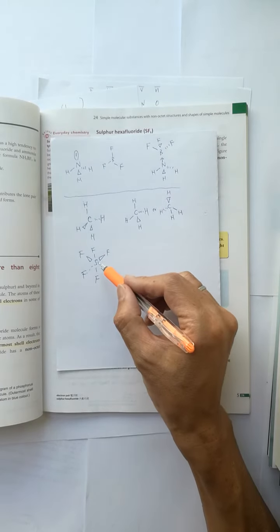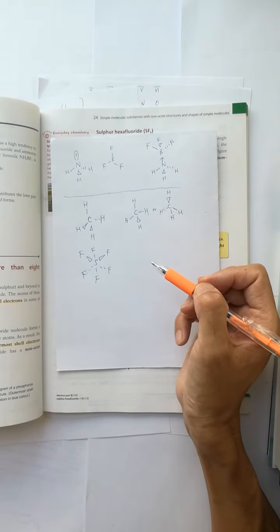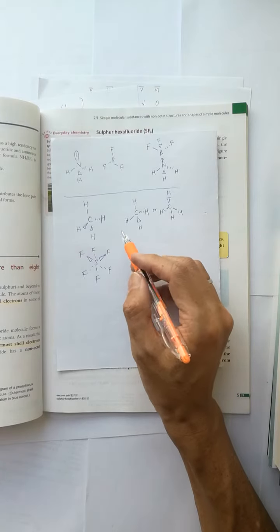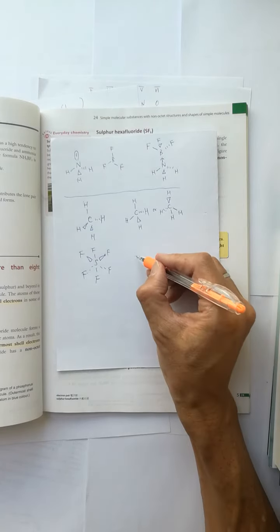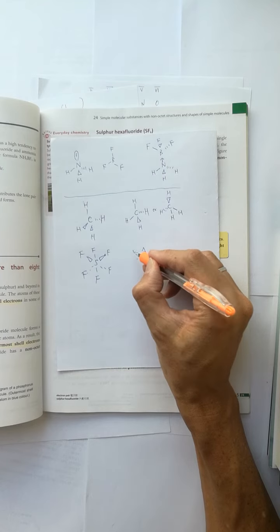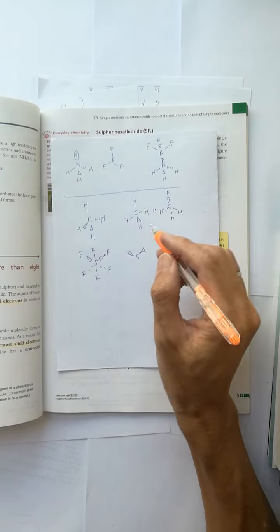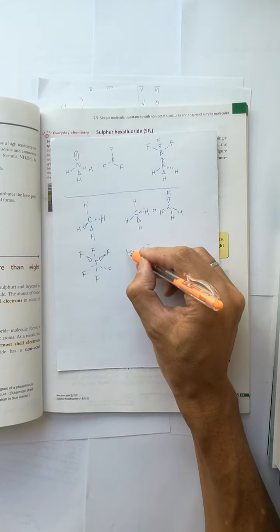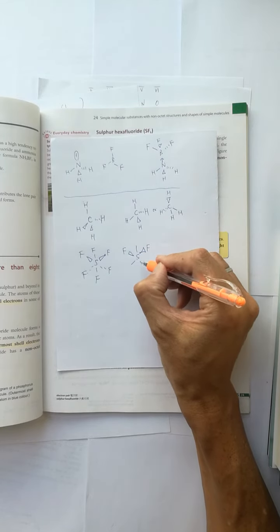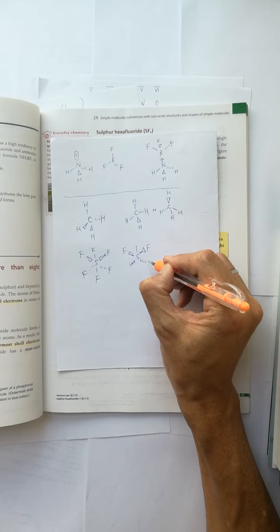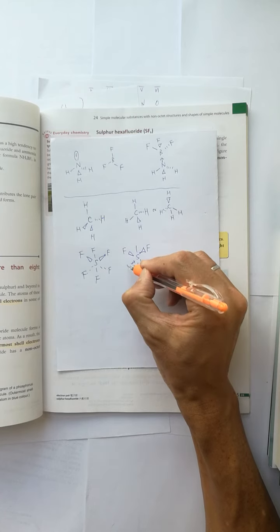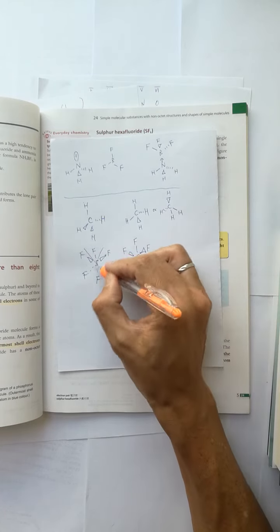And for the triangle, the pointed side should be pointed to the central atom, not the side of the triangle point to the central atom. So it is not correct.